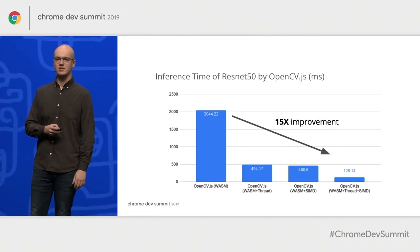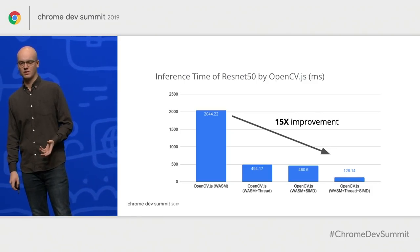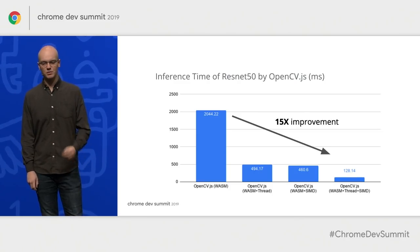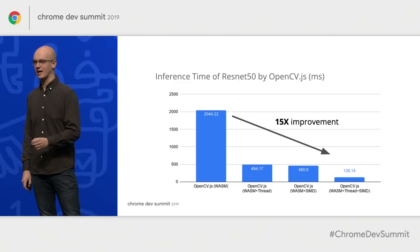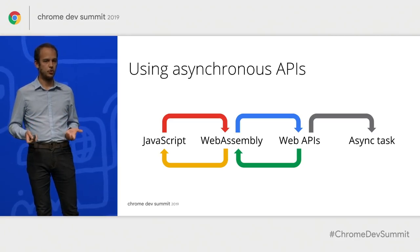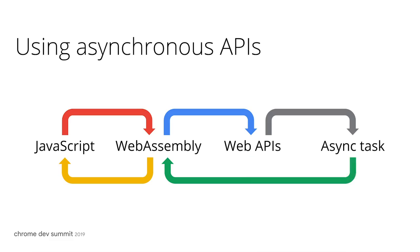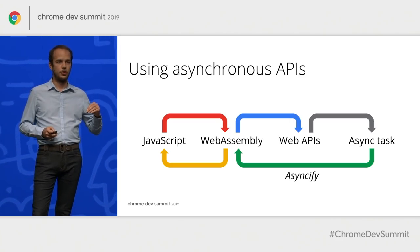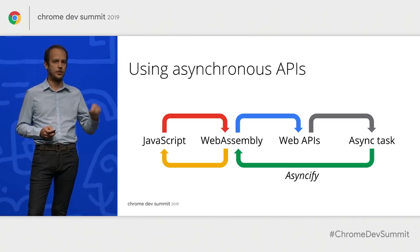Our benchmarking backs up this visually noticeable difference. When using both threads and SIMD together, common tasks in OpenCV can be improved by around 15x. We also want to be able to not only start an asynchronous task, but wait for it to finish, read the results back, and continue execution afterwards. This is where Asyncify comes in. What it does is compile a WebAssembly module in such a way that it can suspend execution, remember the state, and later resume from the exact same point when an asynchronous task has finished.